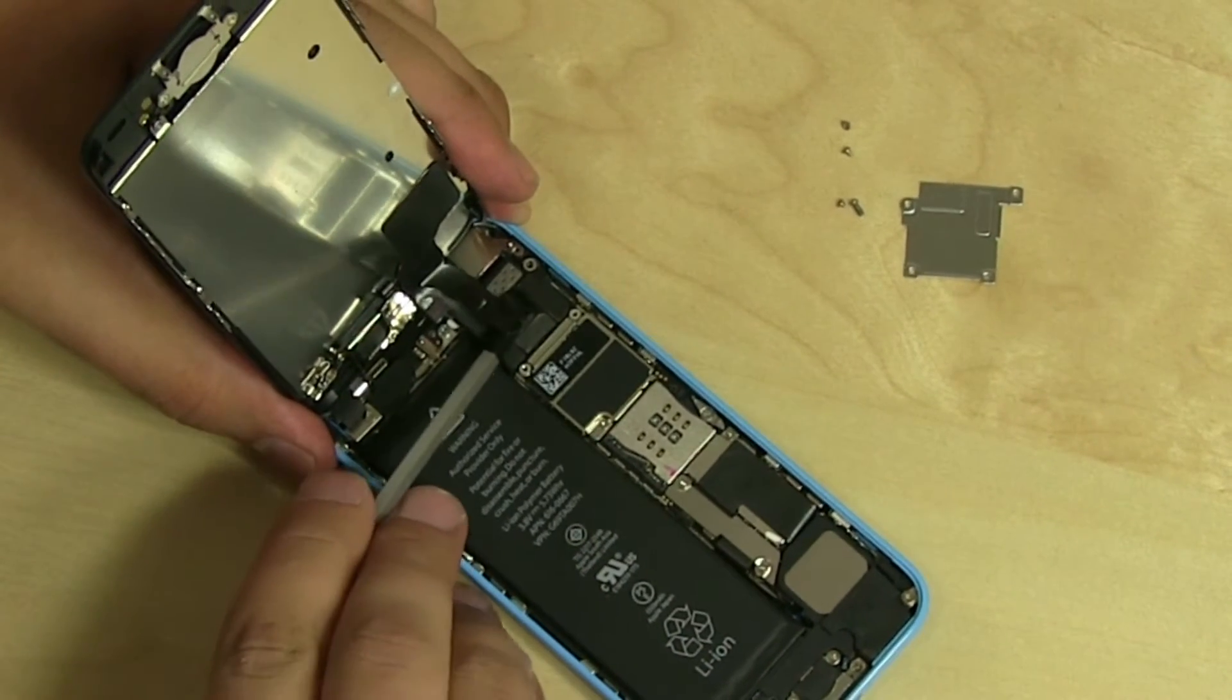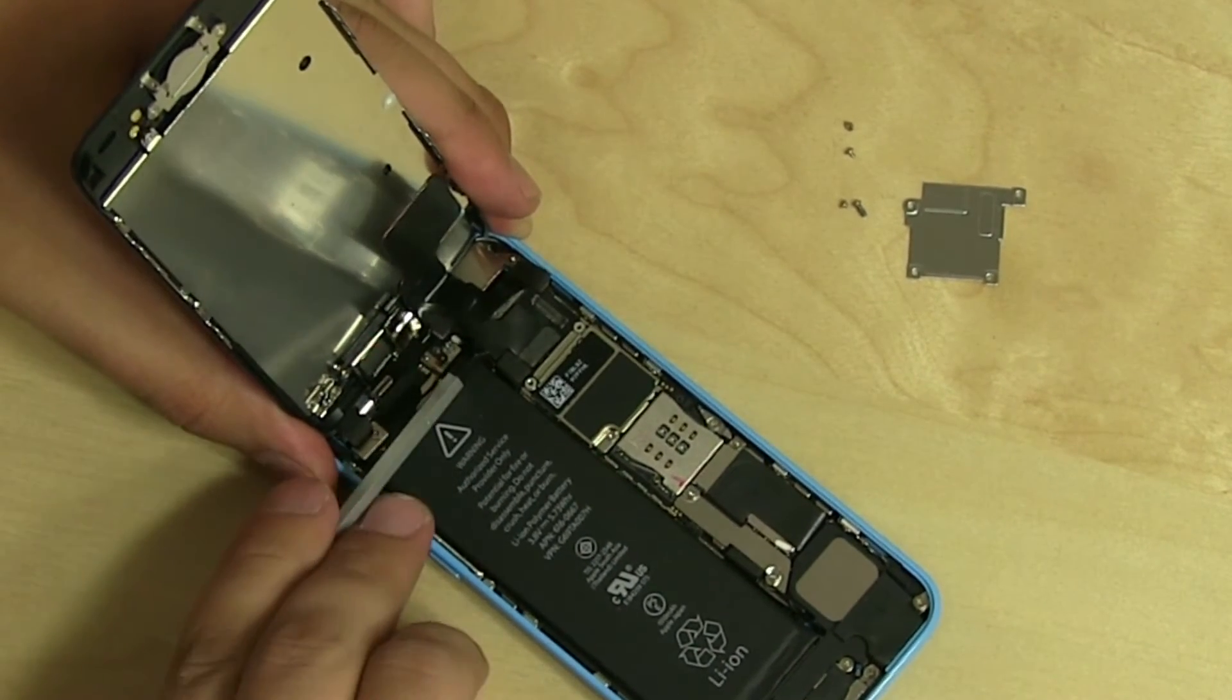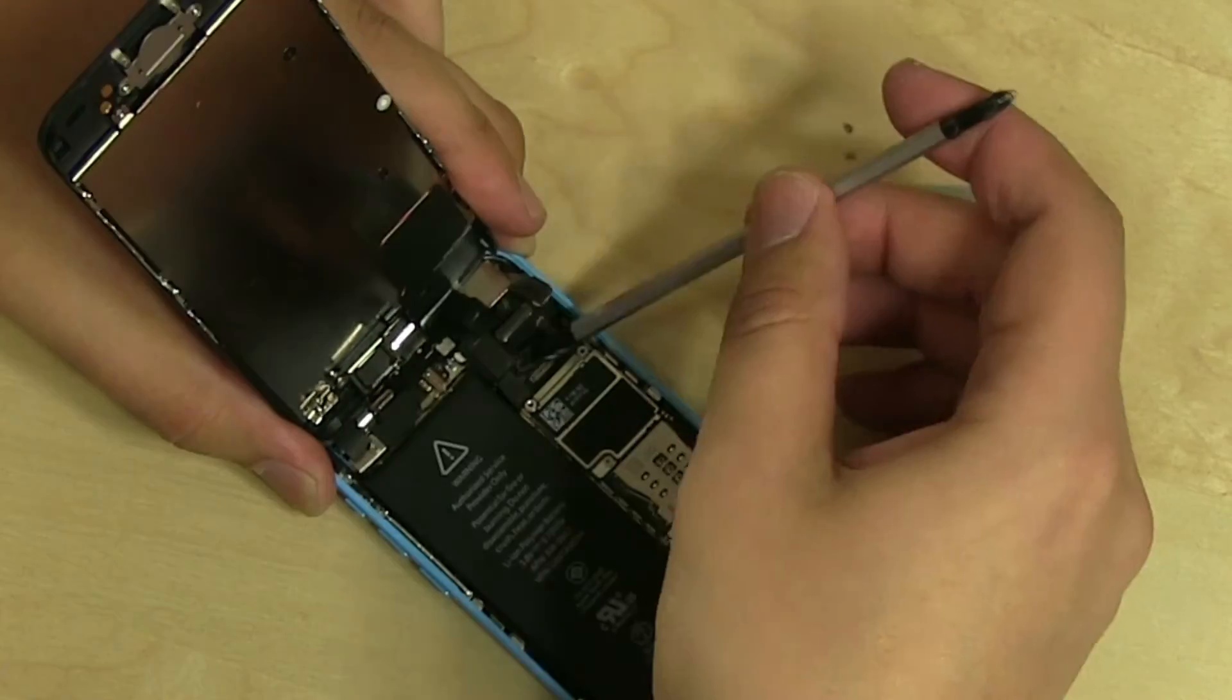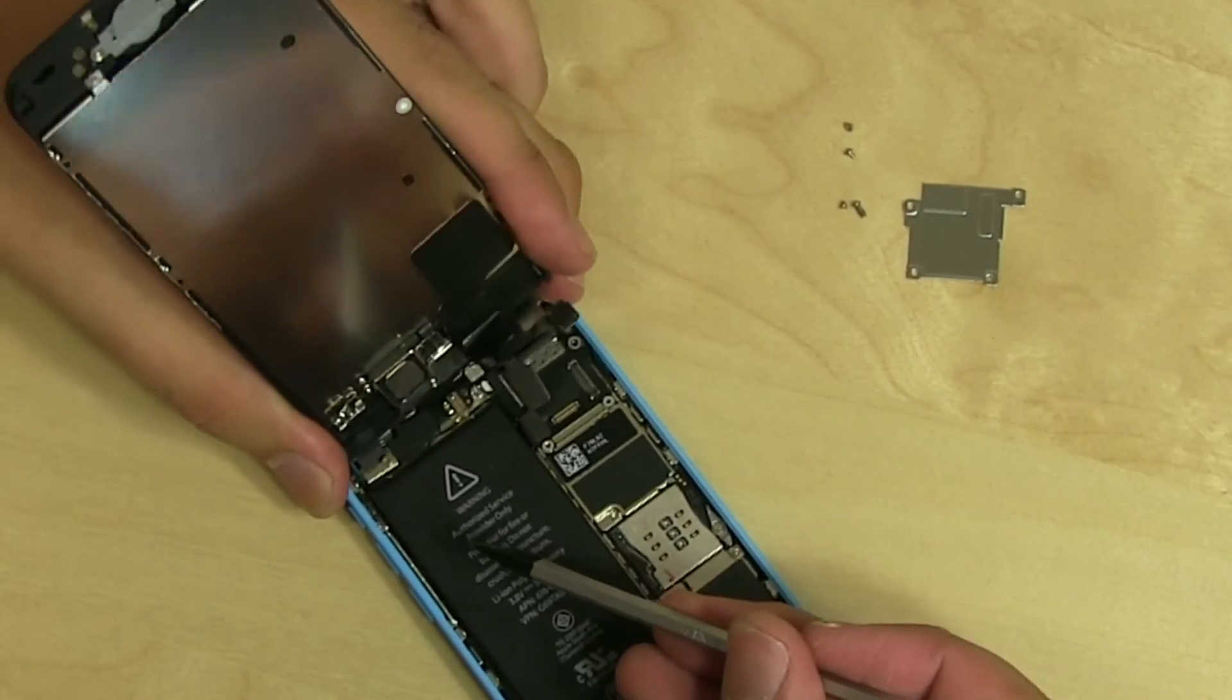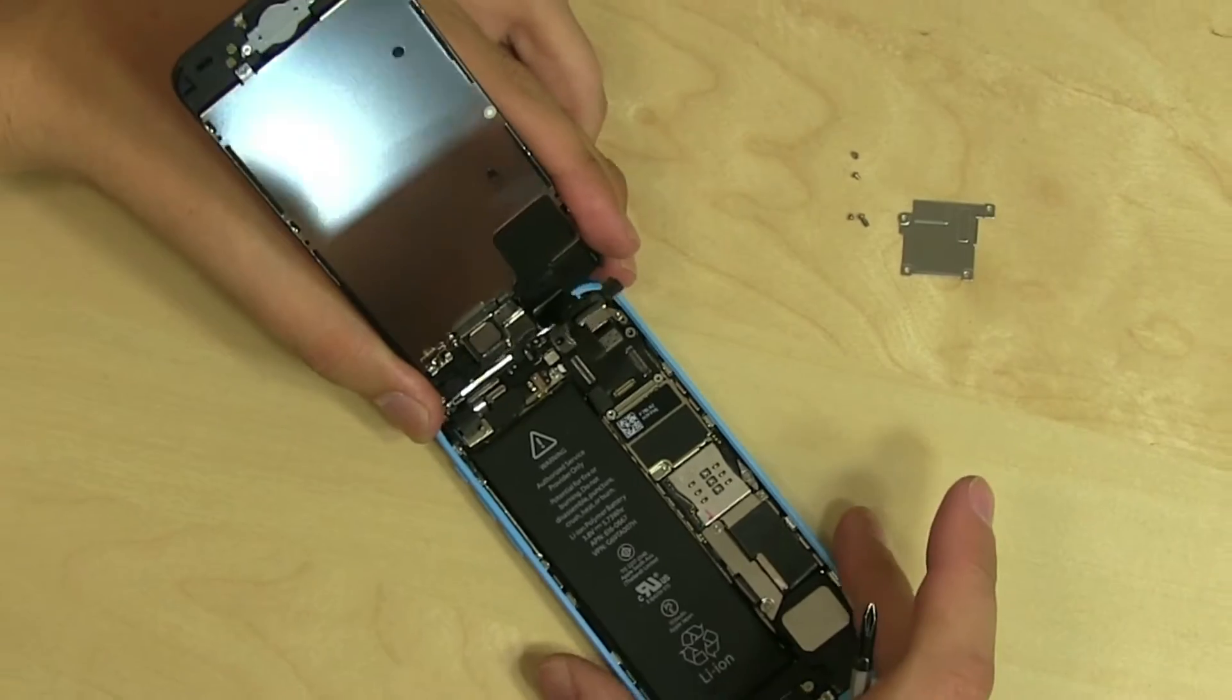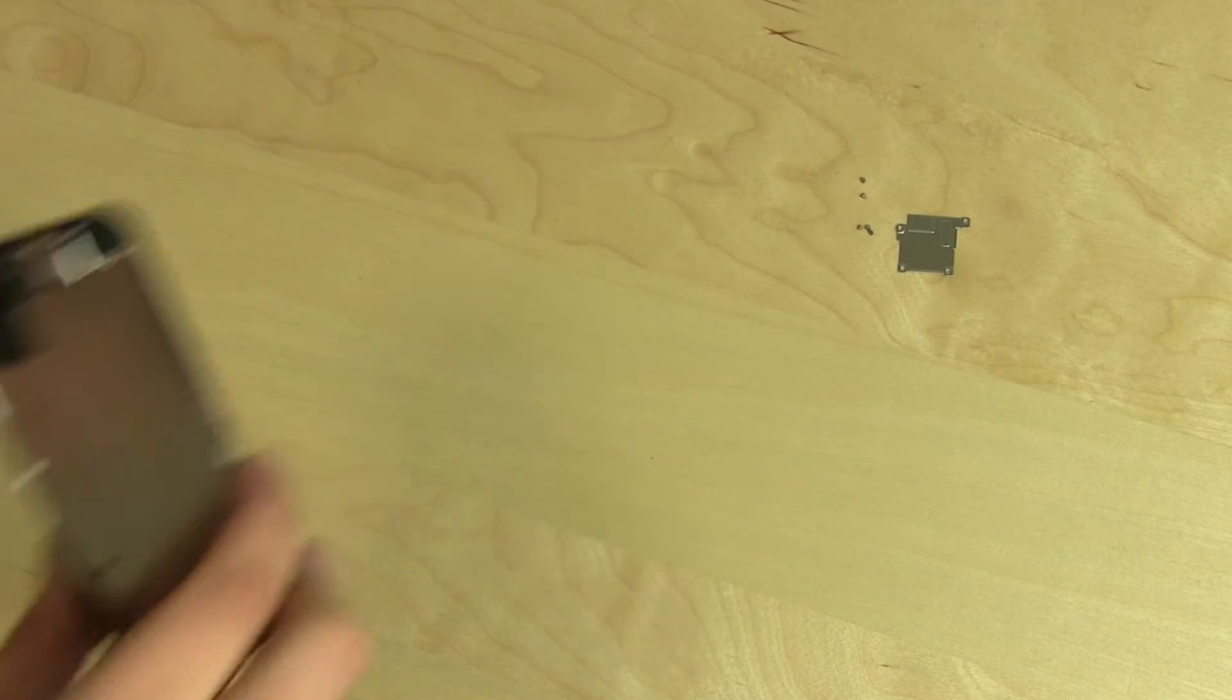Using a pick or a flat screwdriver, gently separate three small connectors from the logic board. Lift the display assembly away from the body and lay it down.